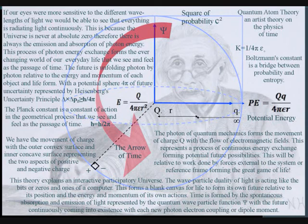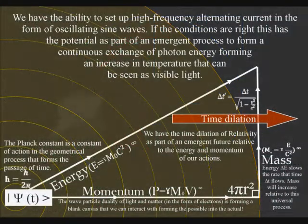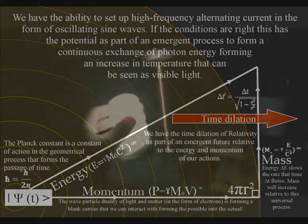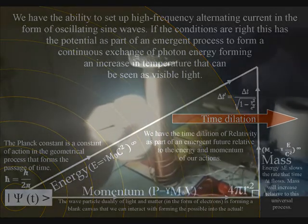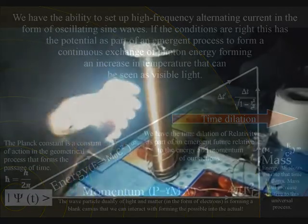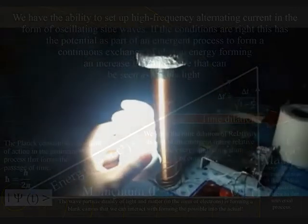This gives us the ability to set up high-frequency alternating current in the form of oscillating sine waves. If the conditions are right, this has the potential as part of an emergent process to form a continuous exchange of photon energy, forming an increase in temperature that can be seen as visible light.